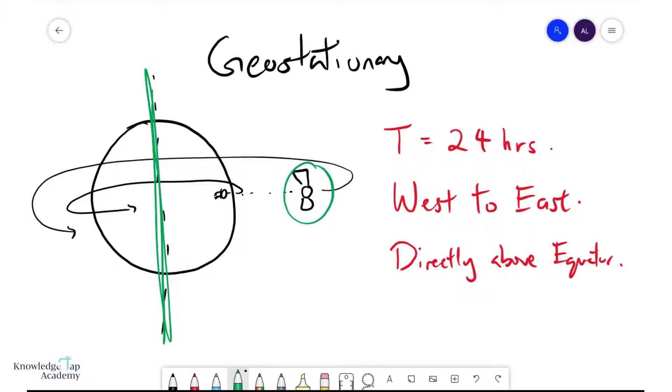And the only way it can achieve that is to be above the equator, because remember that the centripetal force is created by the gravitational force, which always points towards the center of the Earth. So consider a scenario where your satellite may be down here, not above the equator. In which case the gravitational force acts this way, and then it would rotate around the Earth like this, which is going to be on a different axis, and therefore you cannot be geostationary.